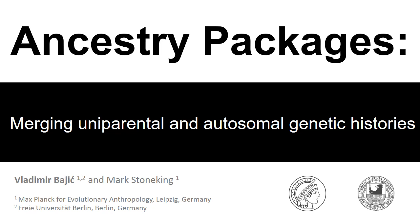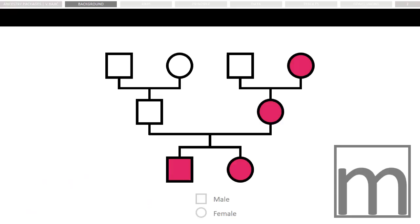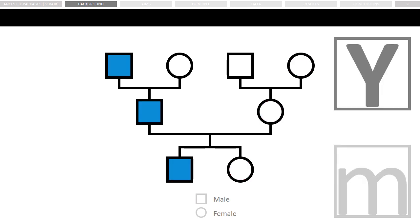I am coming from the field of human population genetics and we often use a diverse set of genetic markers to describe the relationship between populations. By investigating mitochondrial DNA, inherited from mother to offspring, we can get insights into the maternal history of populations. By investigating the Y chromosome, inherited from fathers to sons, we can get insights into the paternal history of populations.